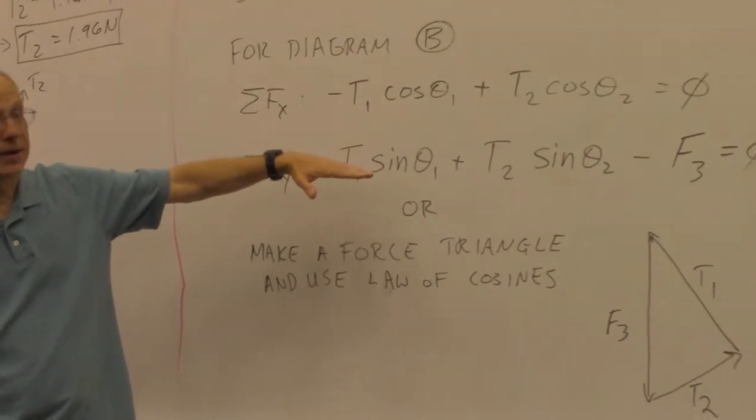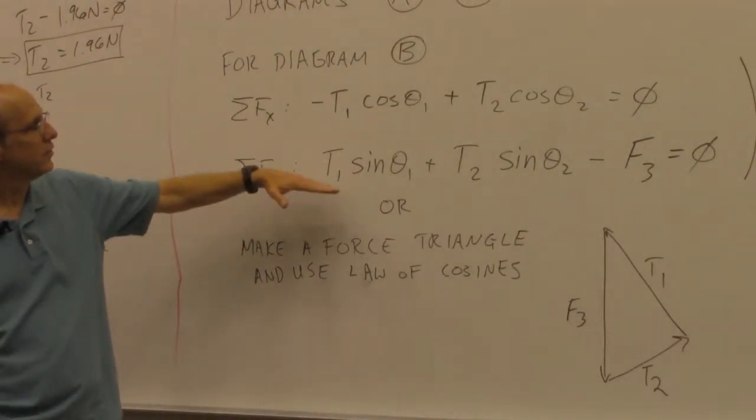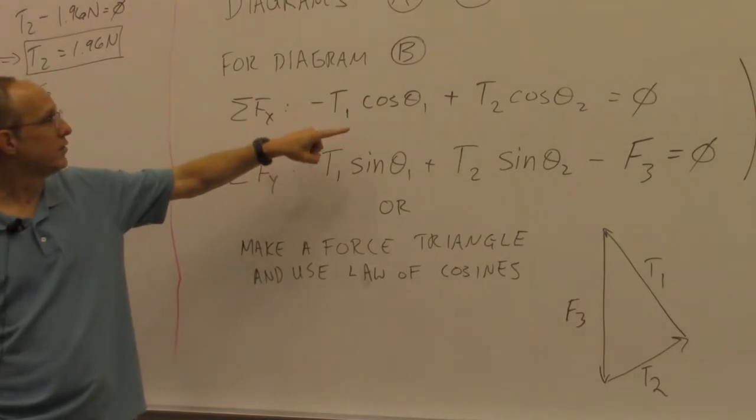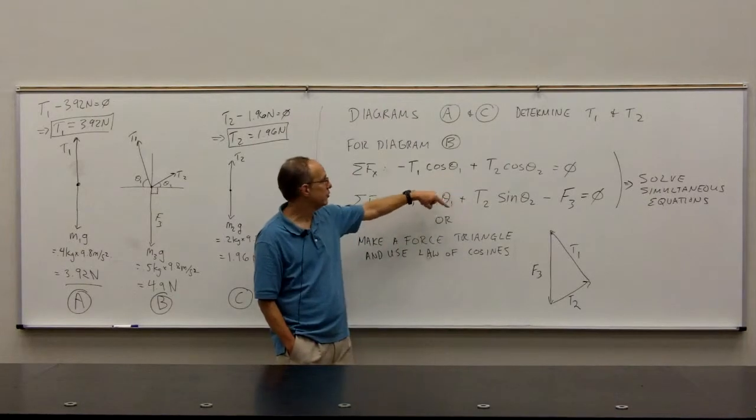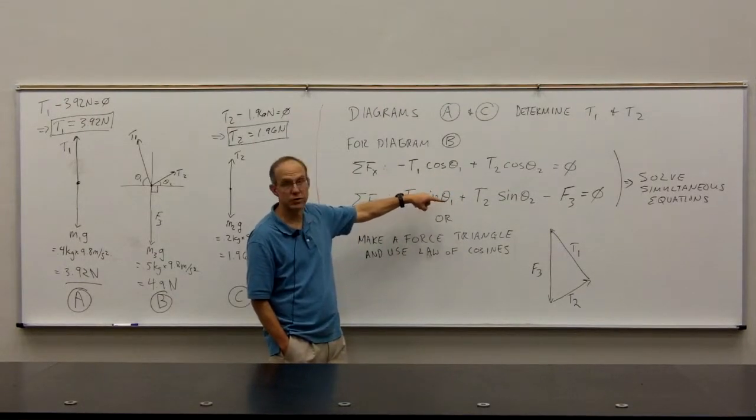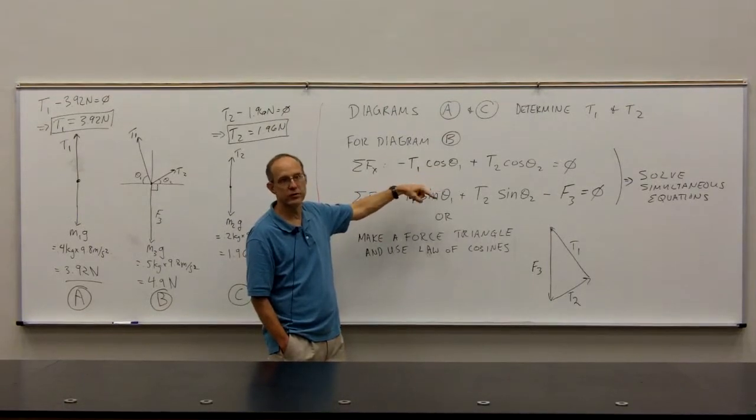That would involve doing simultaneous solutions for these two equations. The caveat here is that to really solve this, you'll need to square these two equations judiciously and use the fact that cosine squared plus sine squared is equal to one.